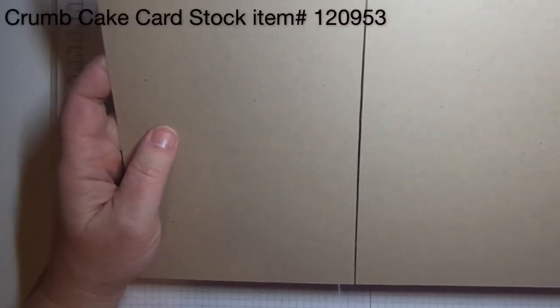The first thing you're going to do is cut your base out of crumb cake cardstock. Sometimes when I say that, people don't know what that means. This is simply an eight and a half by eleven piece of cardstock that I've cut in half along the long axis, and then we'll fold it in half.